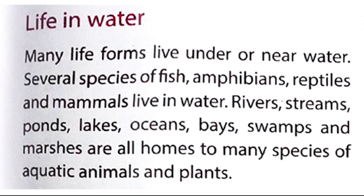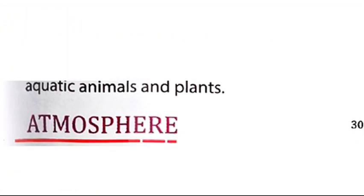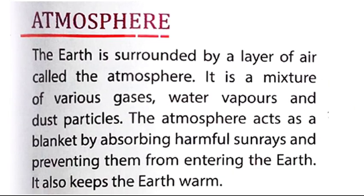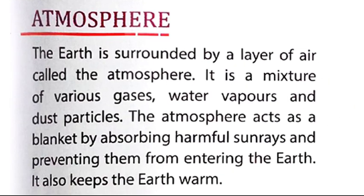Rivers, streams, ponds, lakes, oceans, seas, swamps and marshes are all homes to many species of aquatic animals and plants. Not only on the earth, but many life forms live in rivers or near water, or in swamps and marshes.